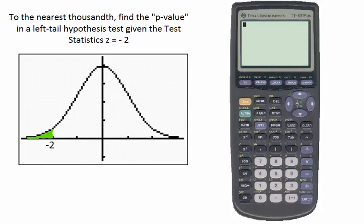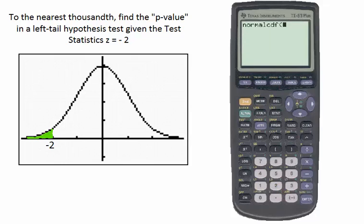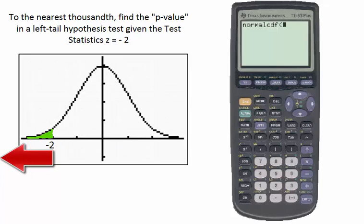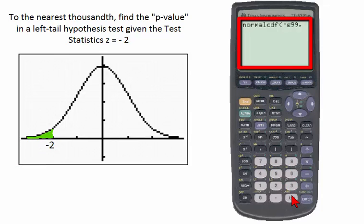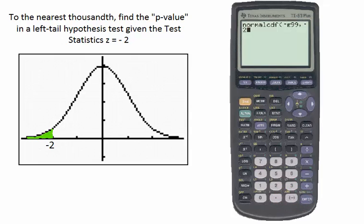The normal cumulative density function gives the same result just without a picture, and it's a little faster. Go to the yellow second button, then the distribution button, and select number 2 — the normal cumulative density function. The input will be the number to the extreme left, which is negative infinity, or in terms of the calculator negative E99, followed by a comma and then negative 2. When inputting negative numbers, use the negative key next to the enter button, not the blue minus key.